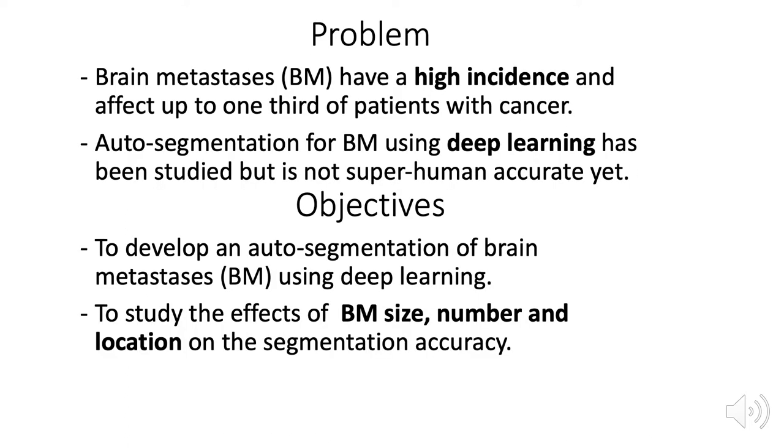Our problem is that brain metastases have a very high incidence and affect up to one-third of patients with cancer. Auto-segmentation for brain mass using deep learning has already been studied, but it's not superhuman accurate yet. So our objectives is not to build a super learner. Instead, we want to focus on evaluating on the testing dataset and to study the factors that affect the segmentation accuracy.